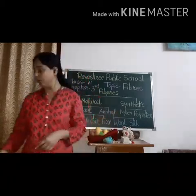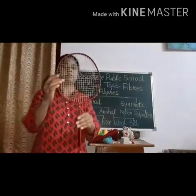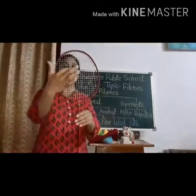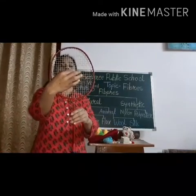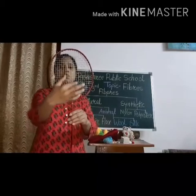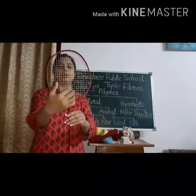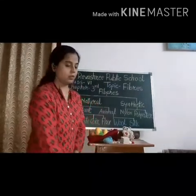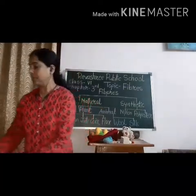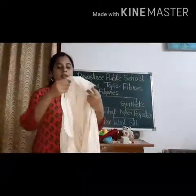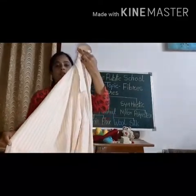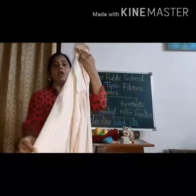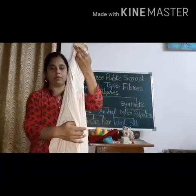Next is nylon. See this badminton racket — this string is made with nylon. Nylon is a synthetic fiber; it is stronger and made from chemicals. Next, see this shirt — this is made with polyester. Polyester is also a synthetic fiber.